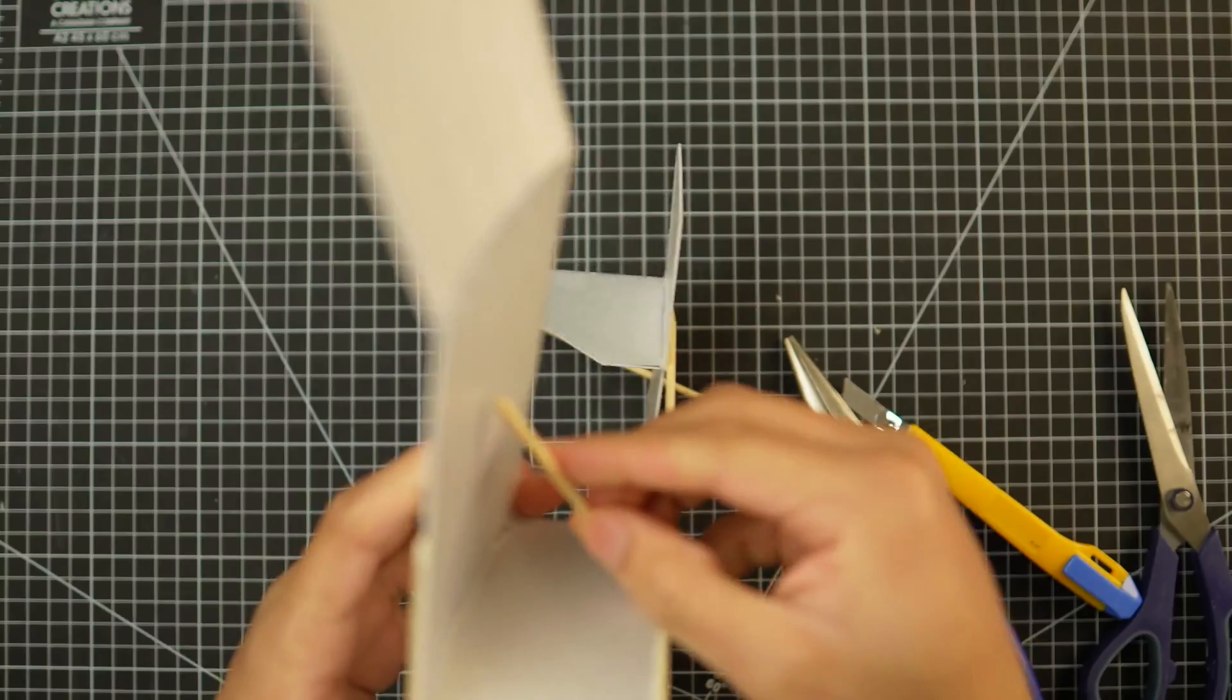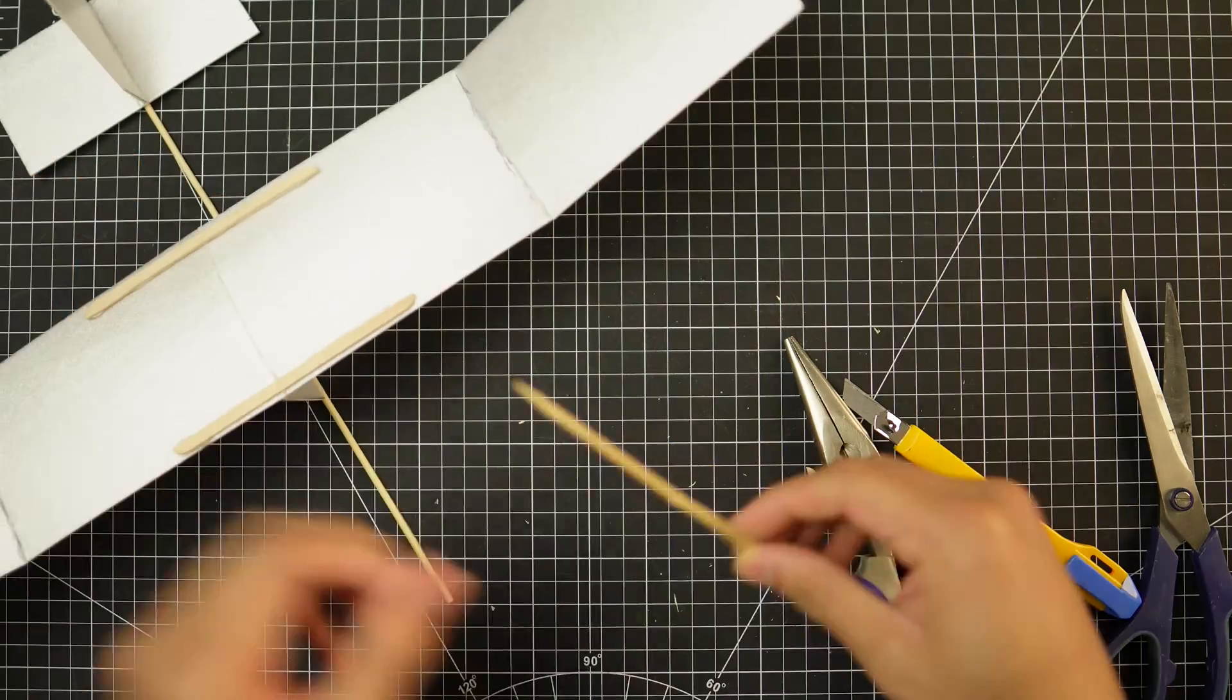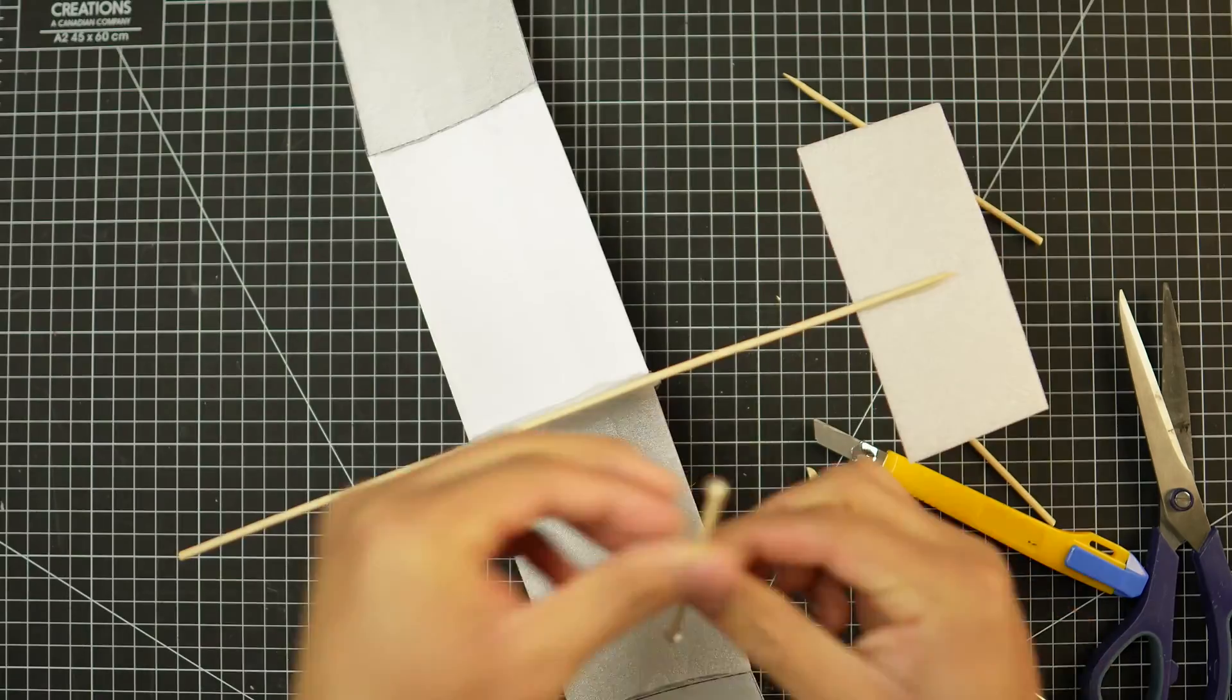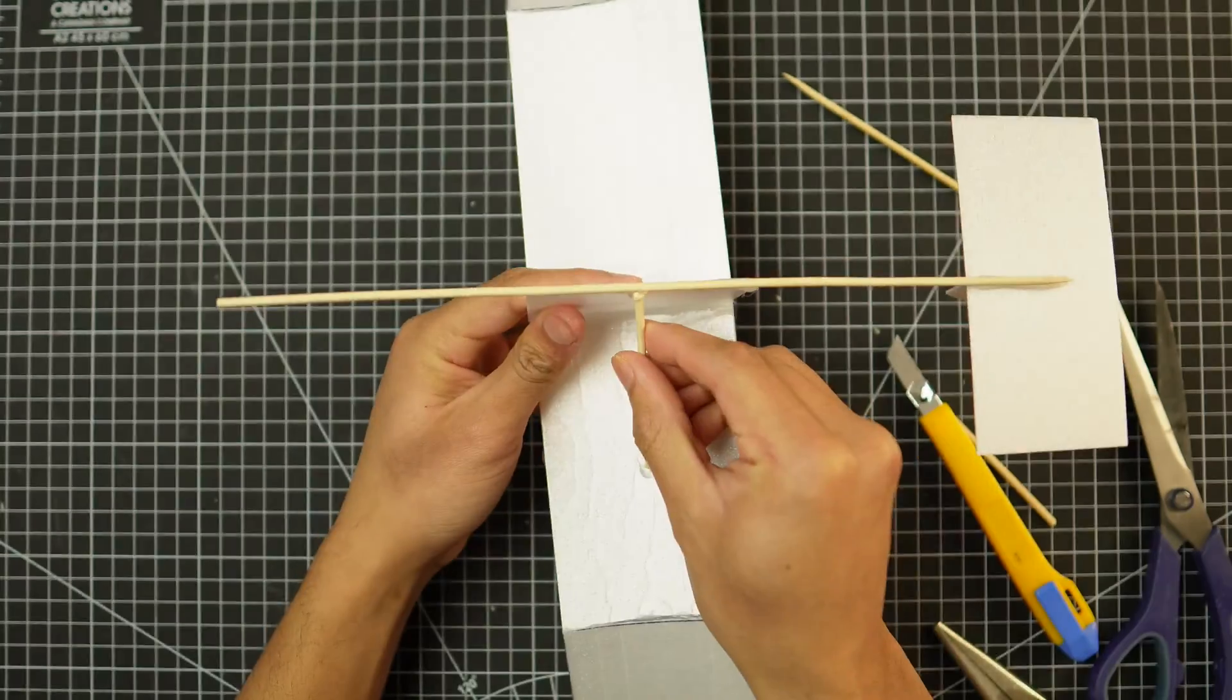To support the wings, I'm going to cut out two little pieces of barbecue sticks which are just going to sit underneath the wing and support the fuselage and that's going to help prevent the wing from wiggling front and back.